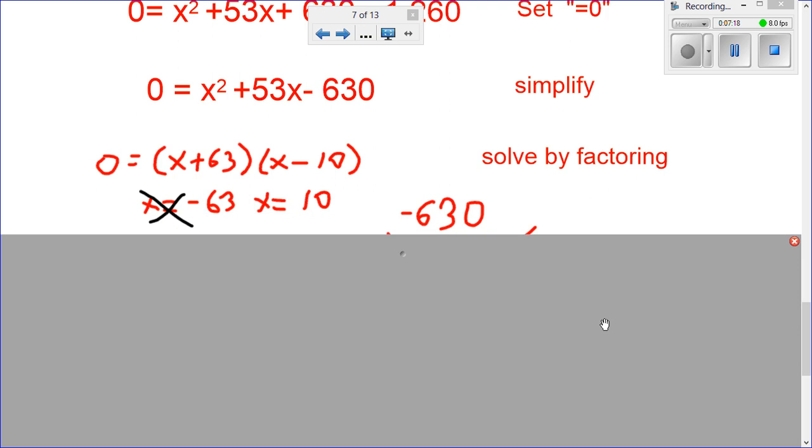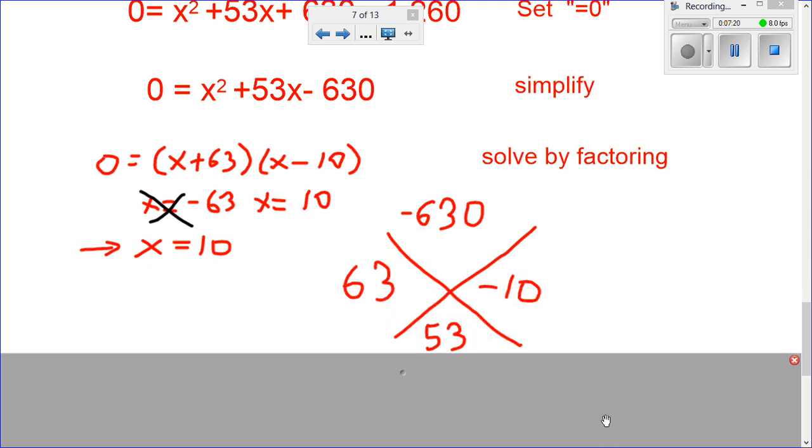So, if we solve by factoring, which means first times last, negative 630. Factors of negative 630 that add up to 53. I found 63 and negative 10. You might have to do a lot of checking here. It may take a little bit of time. We put them back into the equation in factored form. We get zero is equal to x plus 63 times x minus 10.